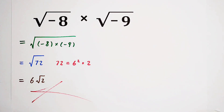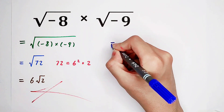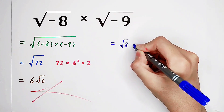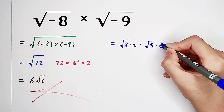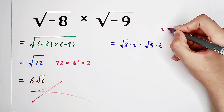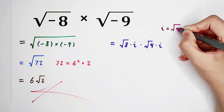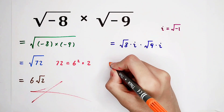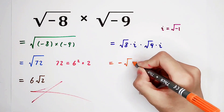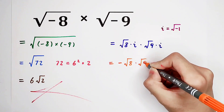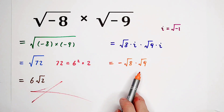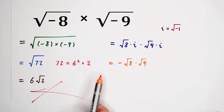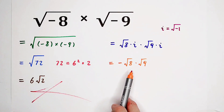So now, what this really equals is square root of 8 times i, and then times square root of 9 times i, where i is the imaginary unit — square root of negative 1. We actually have negative square root of 8 times square root of 9. Because square root of 8 and square root of 9 are both real, we can use the formula: square root of 8 times square root of b equals square root of 8 times b.